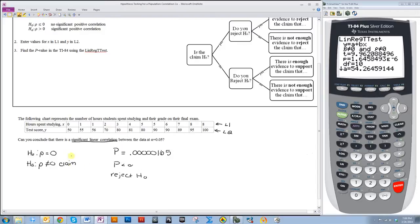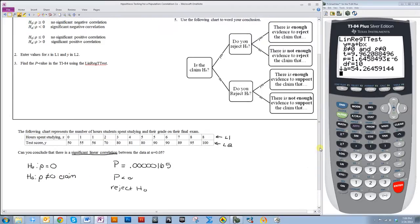Well, H0 was not our claim. Our claim was HA. So if I want to determine how to write my final answer, I look here. Is your claim H0? No. Do you reject H0? Yes. So we say there is enough evidence to support...